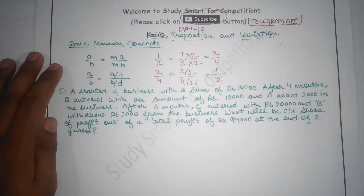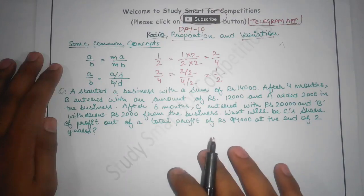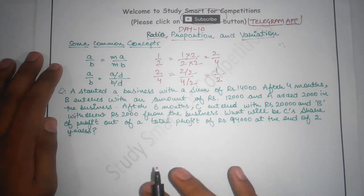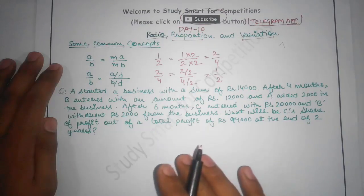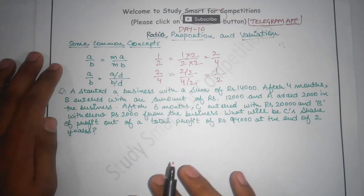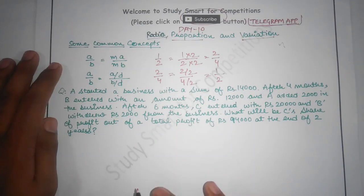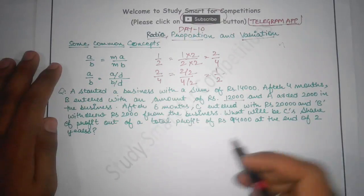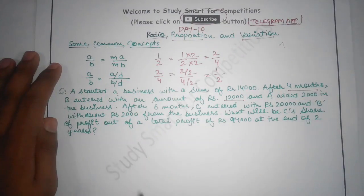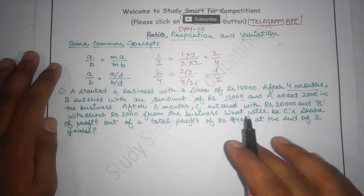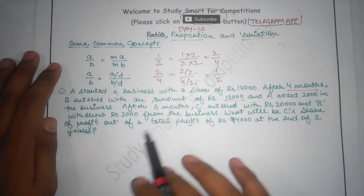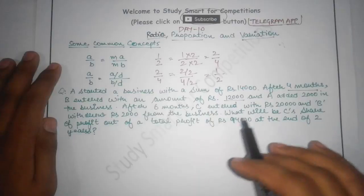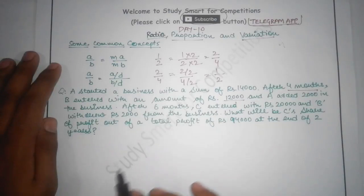Our first problem: A started a business with a sum of Rs. 14,000. After 4 months, B entered with an amount of Rs. 12,000 and A added Rs. 2,000 more into the business. So after 2 more months (6 months total), C entered with Rs. 20,000 and B withdrew Rs. 2,000 from the business.